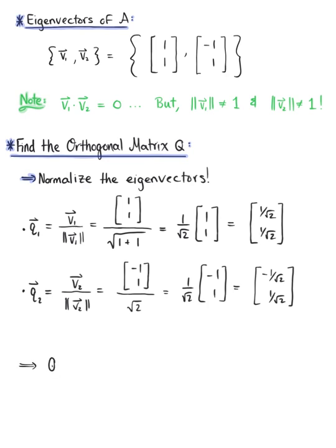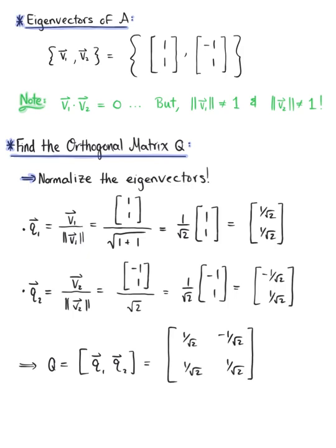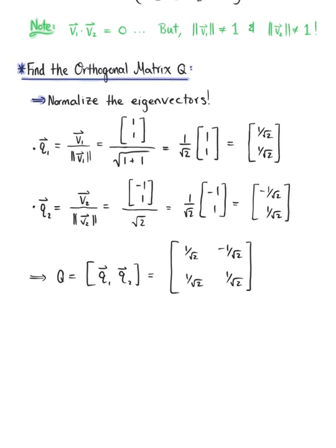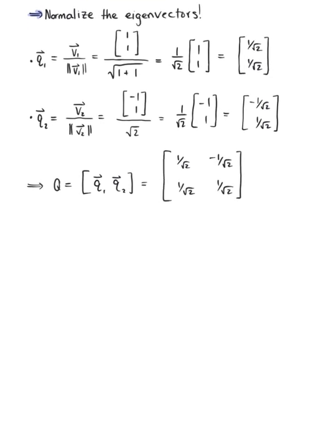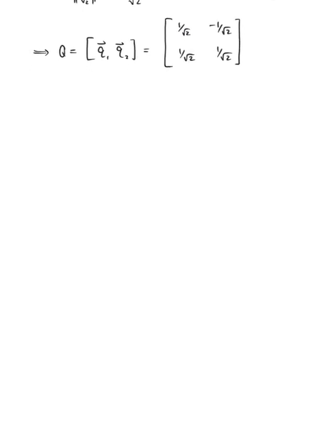Therefore, the orthogonal matrix Q, with column vectors Q₁ and Q₂, is the 2×2 matrix [1/√2, -1/√2; 1/√2, 1/√2]. The transpose of matrix Q has these as its row vectors: Q^T = [1/√2, 1/√2; -1/√2, 1/√2].